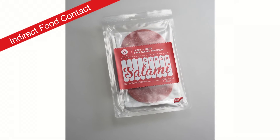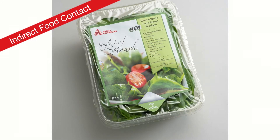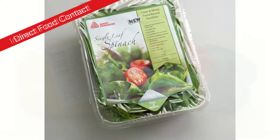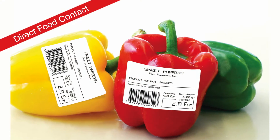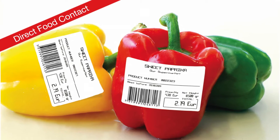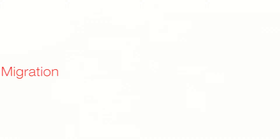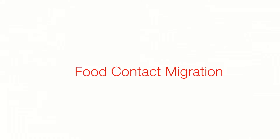Indirect food contact means there is a functional barrier that separates the material from the food, whereas direct food contact means that the material directly contacts the food, and this can cause migration. The main concern with migration is when chemicals or other substances from the adhesive or other components of the labels migrate to the food or through the food package.